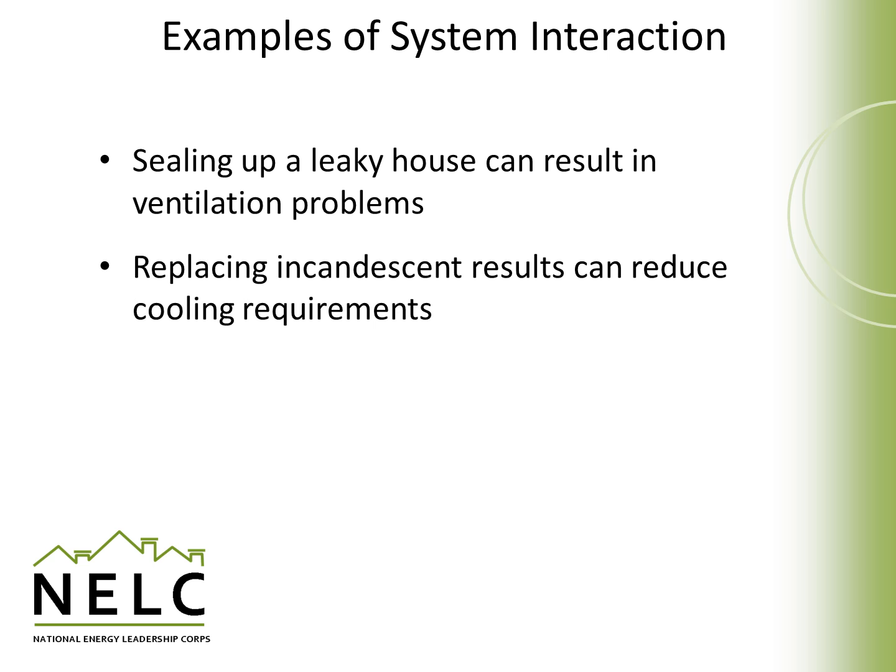Some system interactions are good ones. For example, if we replace a lot of incandescent light bulbs — which give off light but also heat — replacing them can actually reduce the cooling requirements in a space. Sometimes those system interactions can work for us, and those are the ones we try to look for.